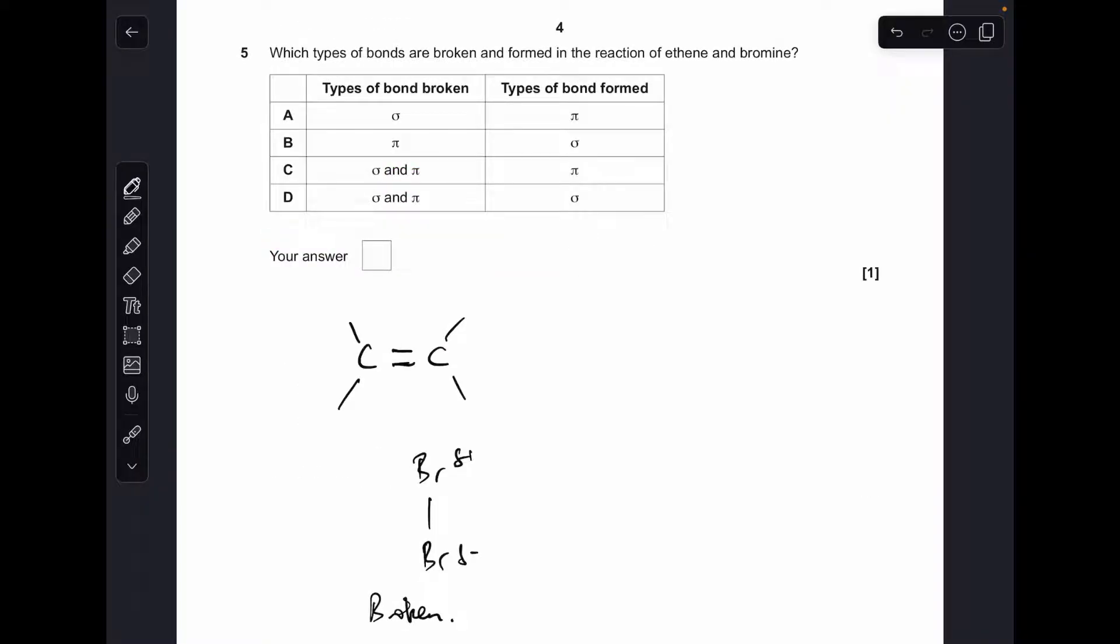To help explain number five, just quickly run through the mechanism. What's going to happen is a pair of electrons from the pi bond attracted to the slightly positive bromine, so the pi bond breaks but we also have a sigma bond broken there. We're down to C and D as our possible answers. Then the final part of the mechanism, pair of electrons on the Br minus ion attracted to the C plus of the carbocation and we get a sigma bond form in there. Option D was the right answer.